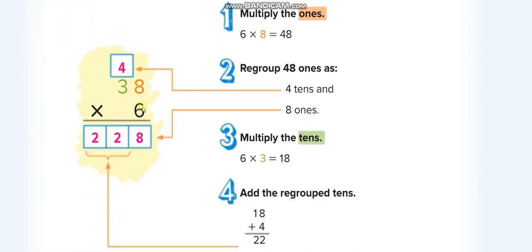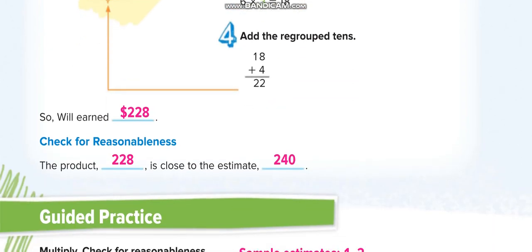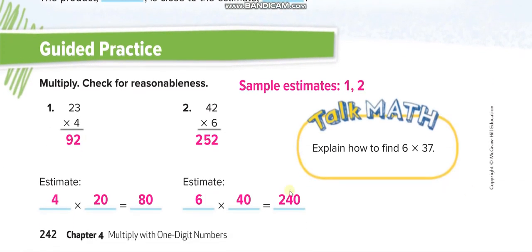Next page. This is the estimation and this one is the actual problem. 6 times 8 is 48, we write 8 down here and 4 up. We did the regrouping of 4 tens. Now 6 times 3 is 18 plus 4 is 22. We don't have another number to regroup, so we'll write 22 down here. So the answer is 228.